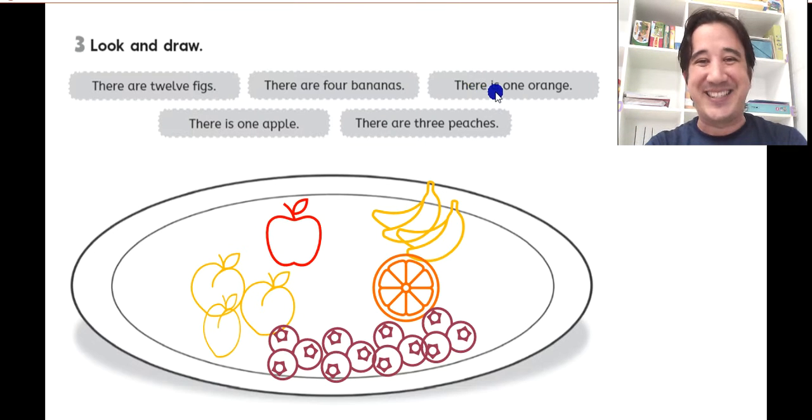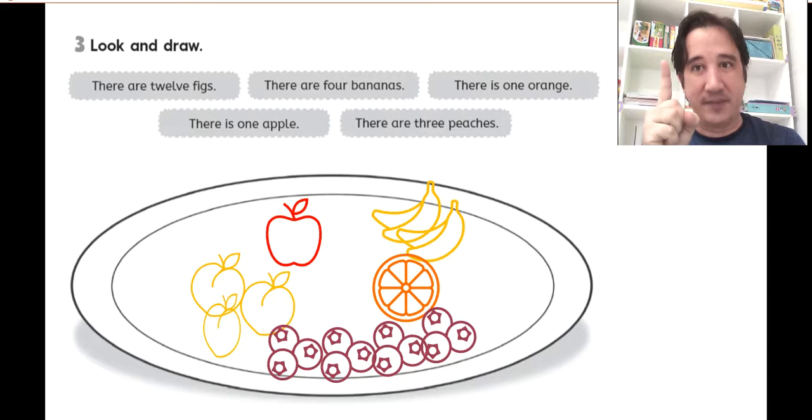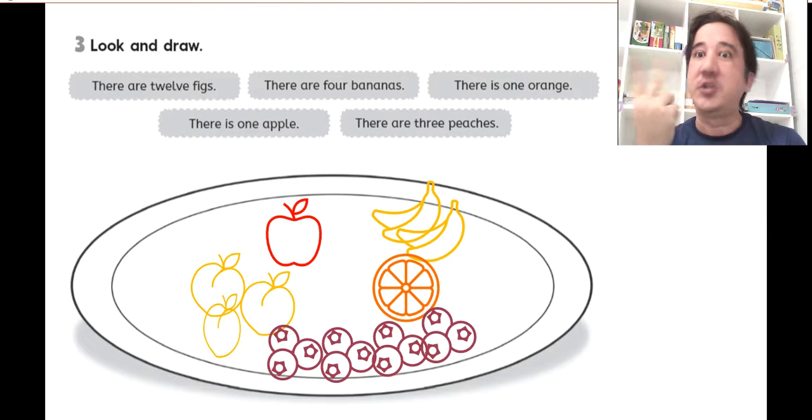Look. There is 1 orange. There is 1 orange. There is is with 1. There is 1. There are 2, 3, 4. So there is 1 orange. Here is my orange.